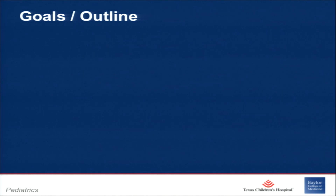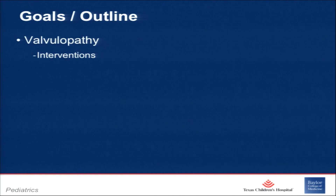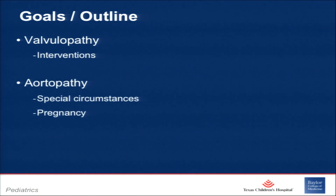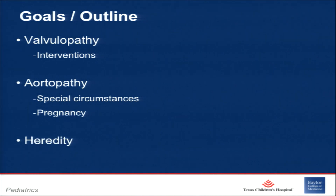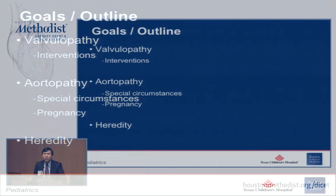There are only three things you have to know about bicuspid aortic valves: it's a valvulopathy — it affects the valve; it's an aortopathy — you have to think about it downstream; and then it's heredity. If you remember those three things, you'll know everything you have to know.